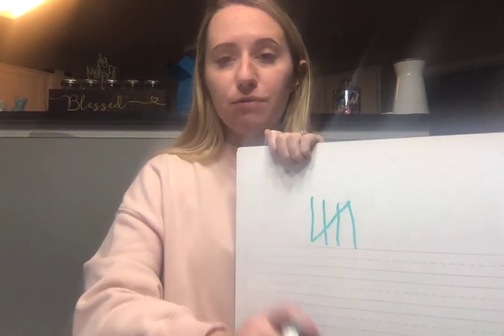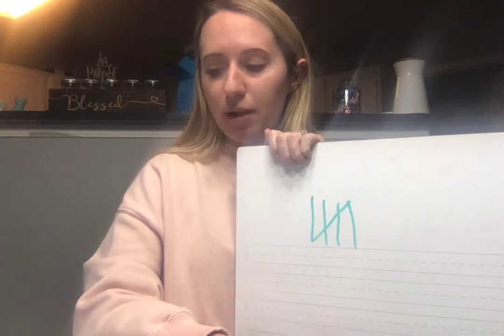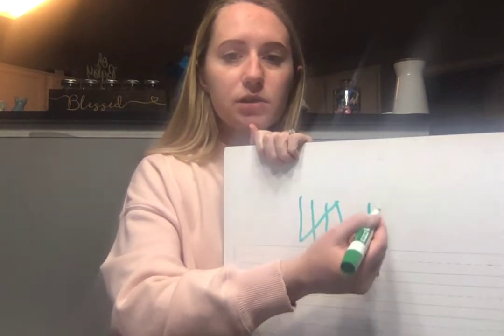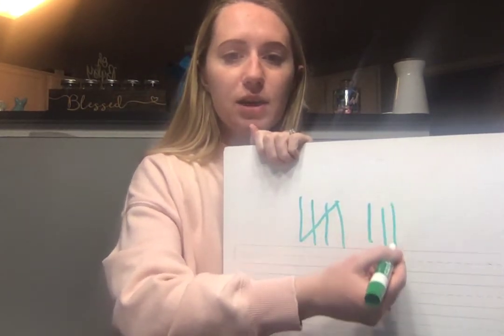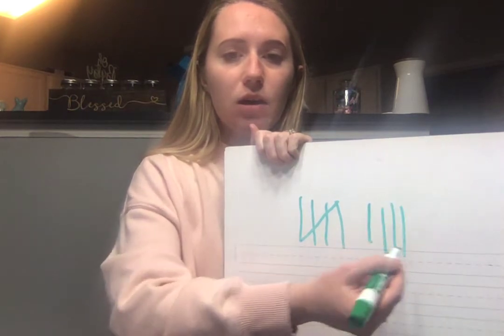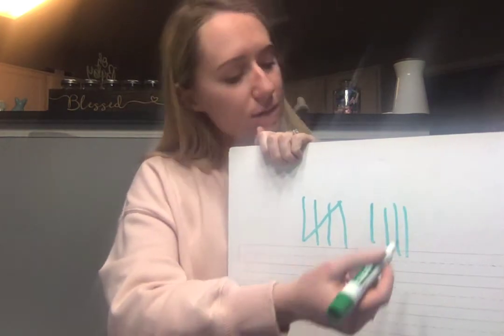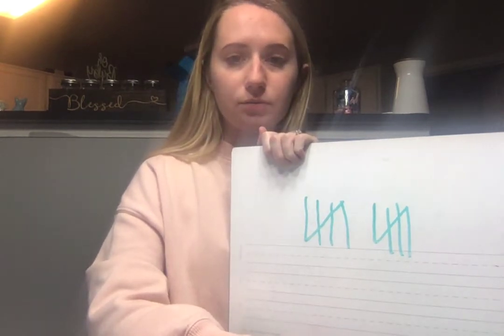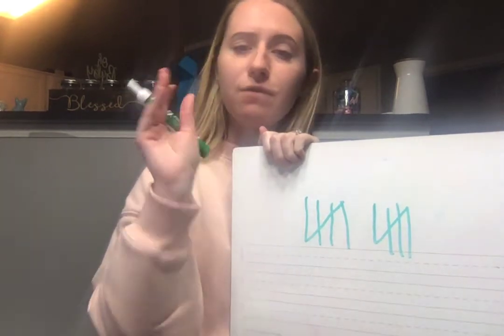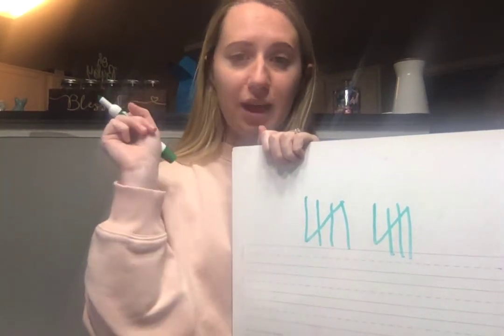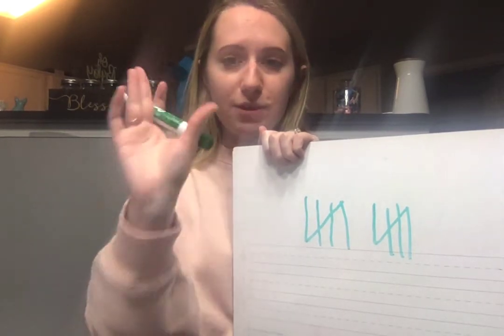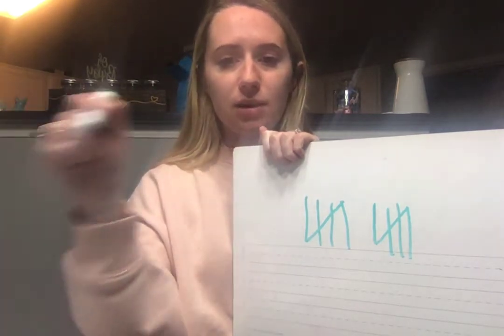Now I have a group of five tally marks and then I keep going — six, seven, eight, nine. Now I'm at my fifth number, I need to cross. Every fifth number I cross. I'm going to review it with you so you don't forget — it's super important. Every fifth number I cross it.